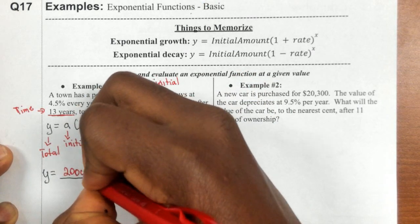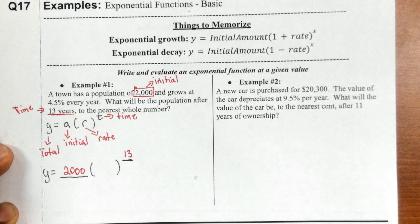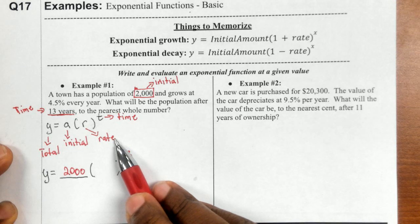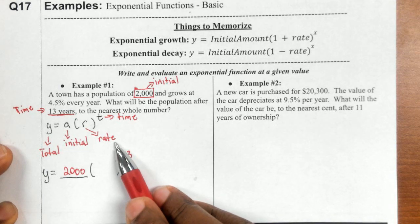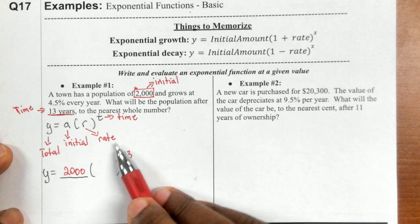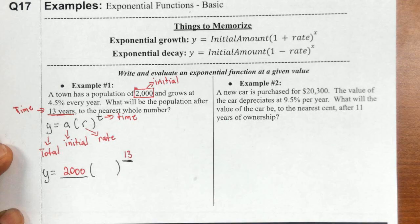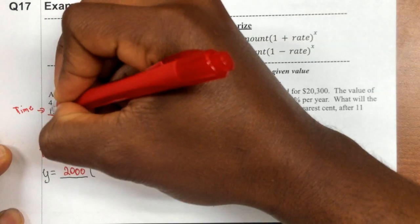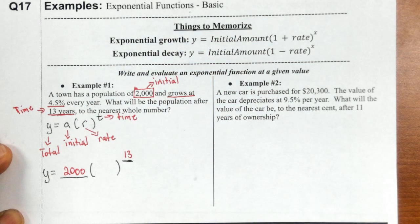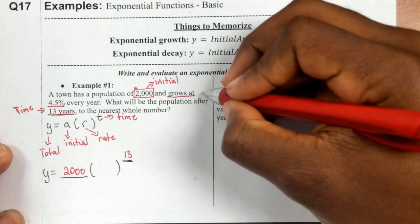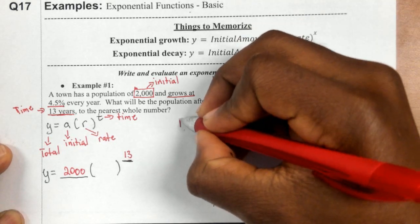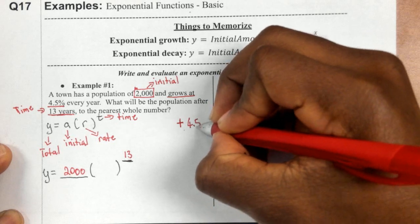That initial value of 2,000 goes on the line in front of my parentheses. Now we need to find our rate — that's the only thing you have to calculate. To calculate the rate, we look at the fact that it says it's growing at 4.5%. Growing means you're adding, so I'm adding the 4.5%.